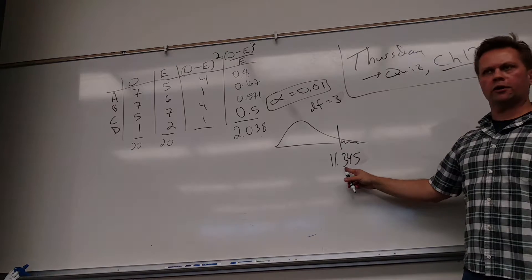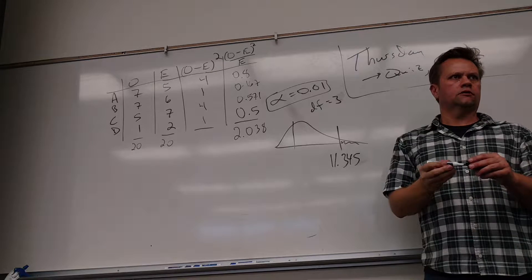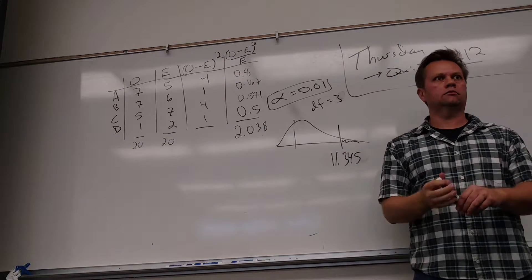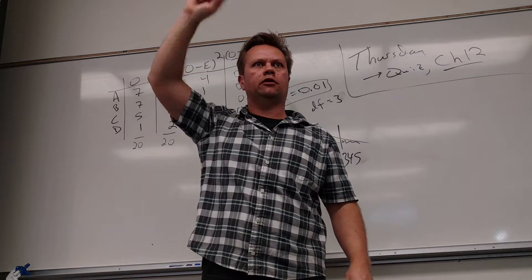Yeah, so it's supposed to be this far away to show evidence that they're not the same. So we have failed to find evidence that they're not the same. So basically, it looks like they could possibly be the same. That the whole population could follow that distribution that they laid out in the book.